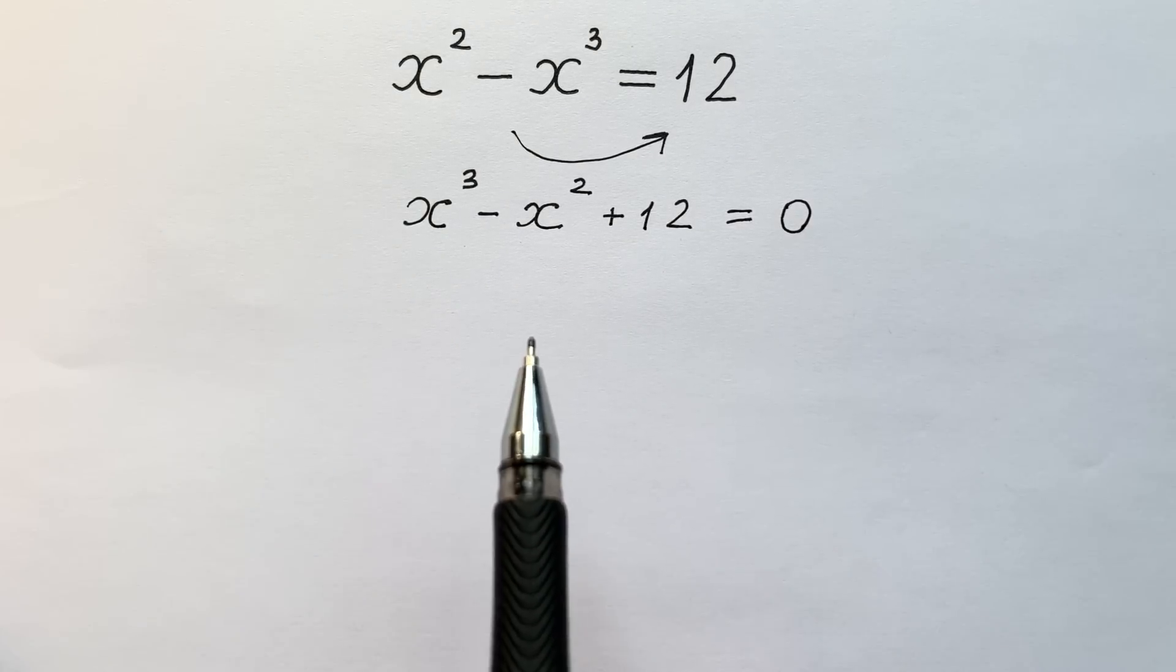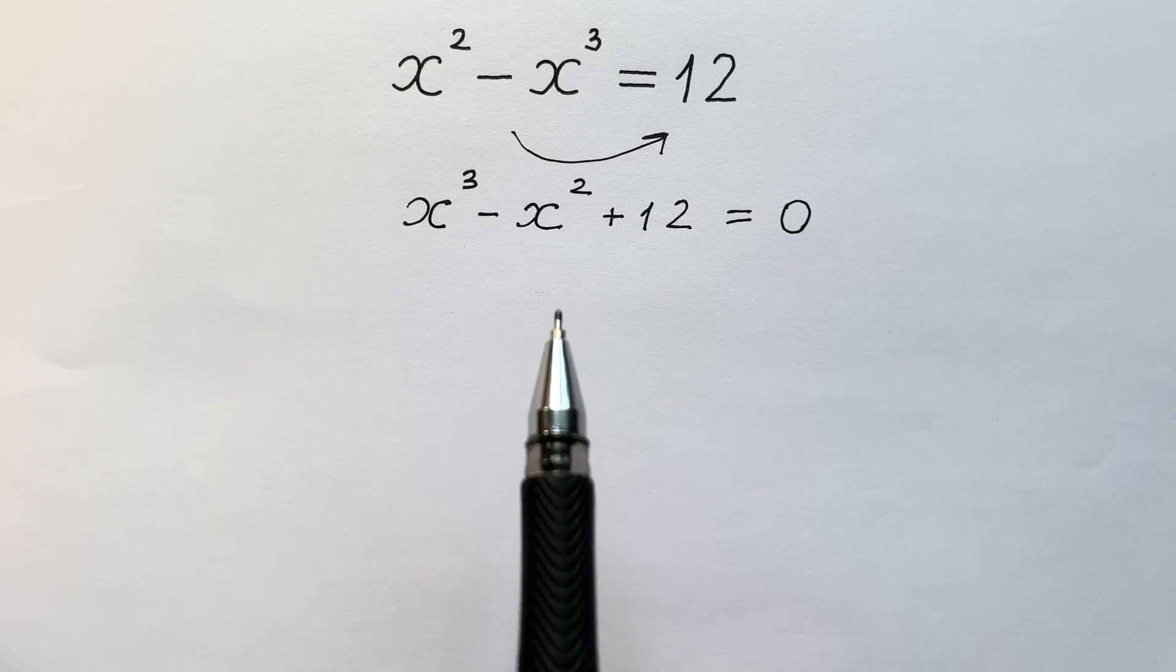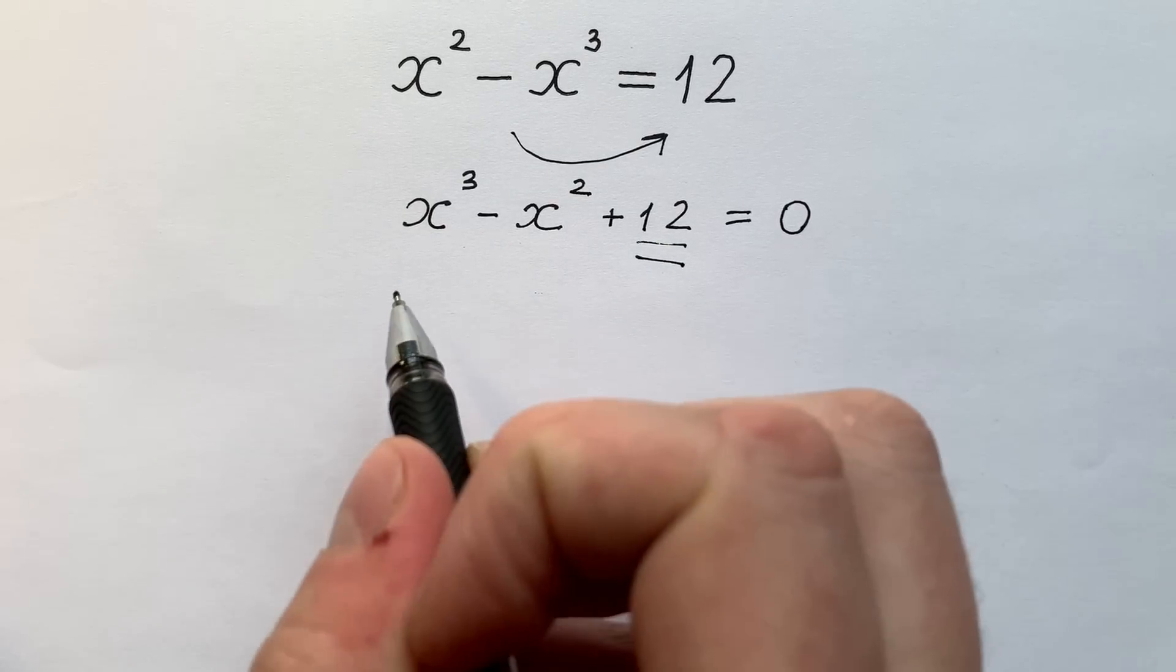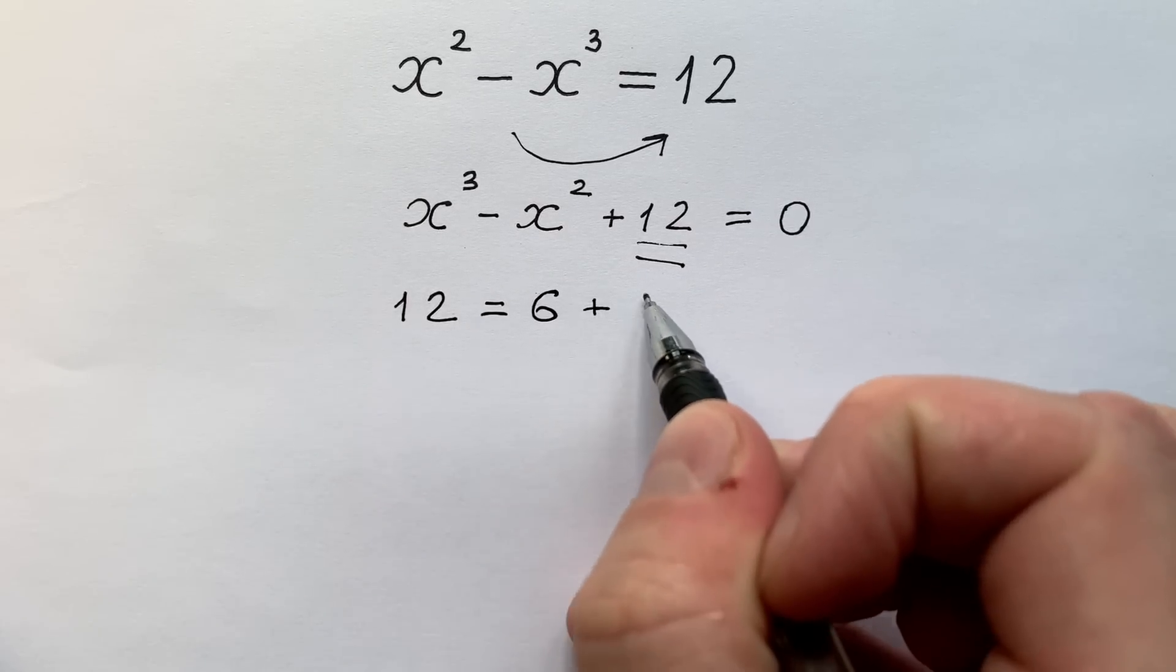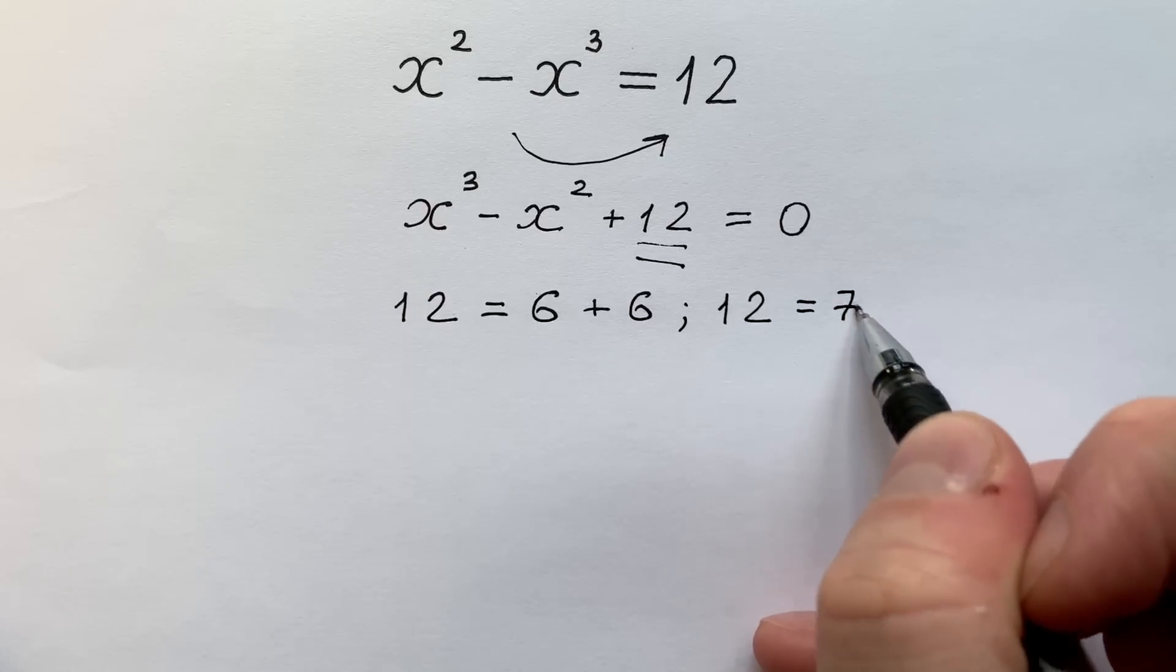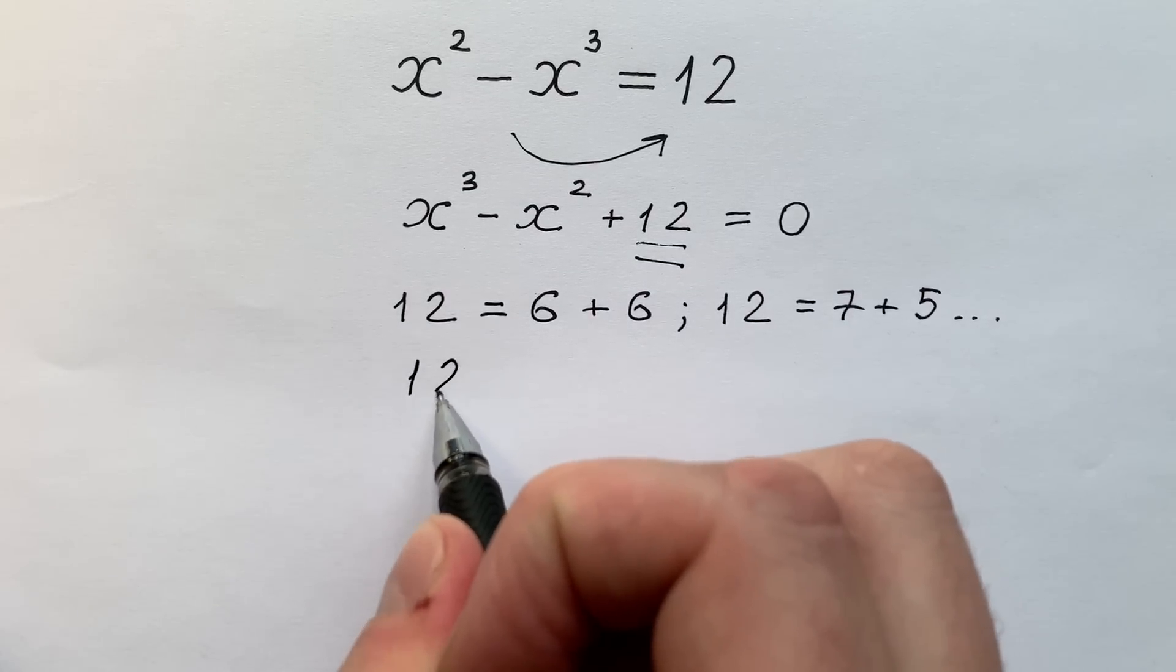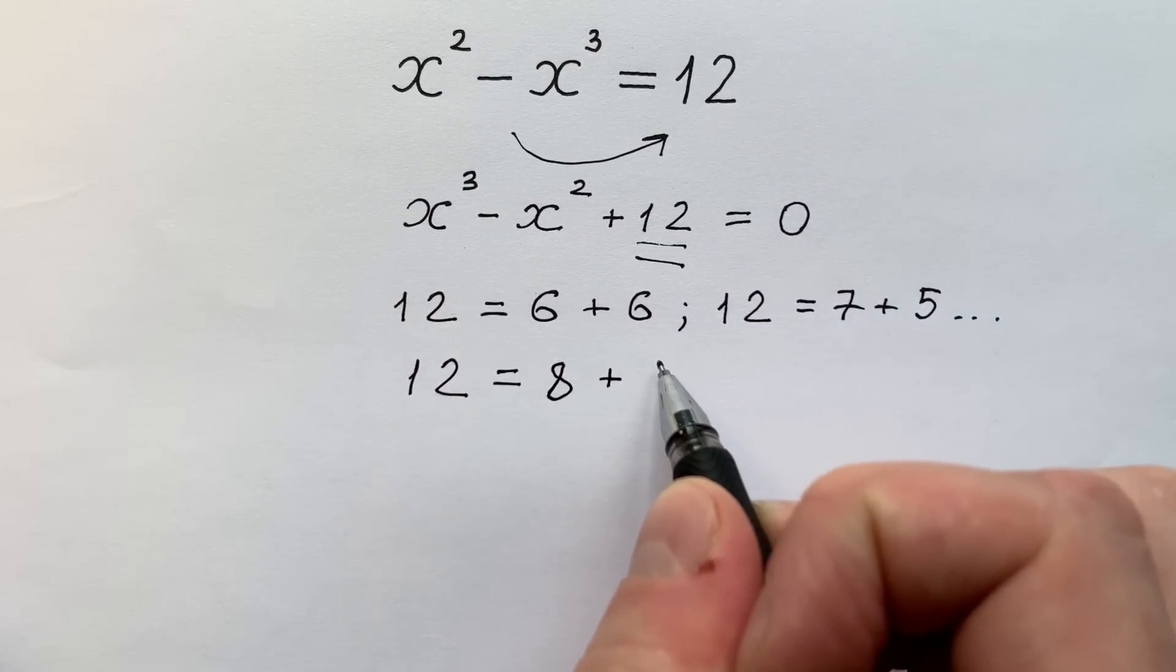But now let's factorize the left side by using a grouping method. To use this method we have to present 12 like sum of two natural numbers, like 12 equals 6 plus 6 or 12 equals 7 plus 5 and some other. But let's try to write 12 like 8 plus 4.